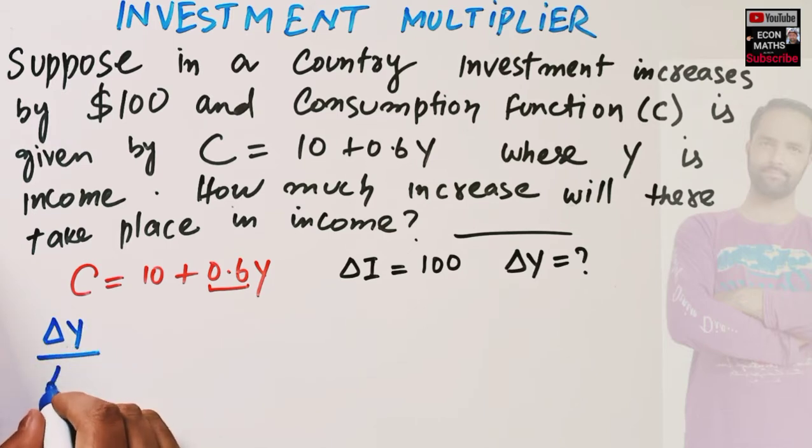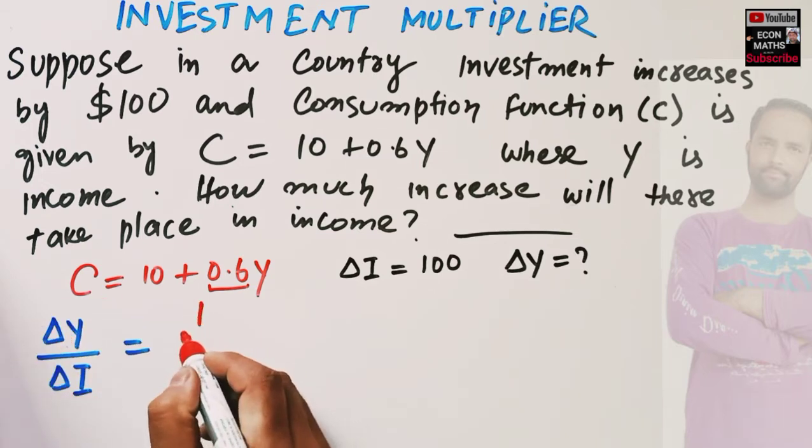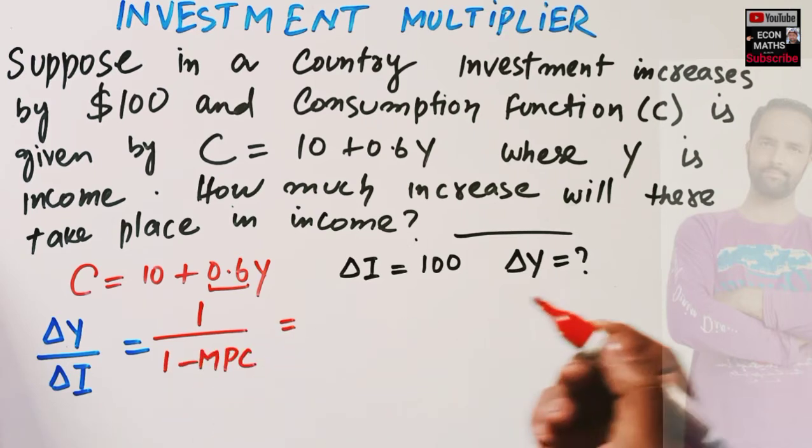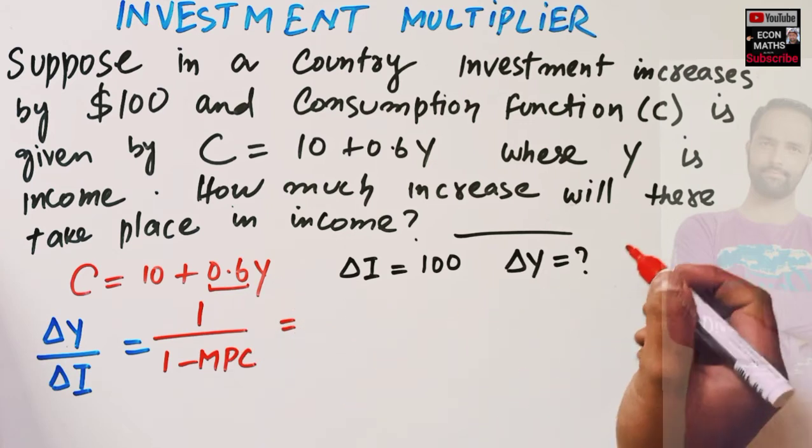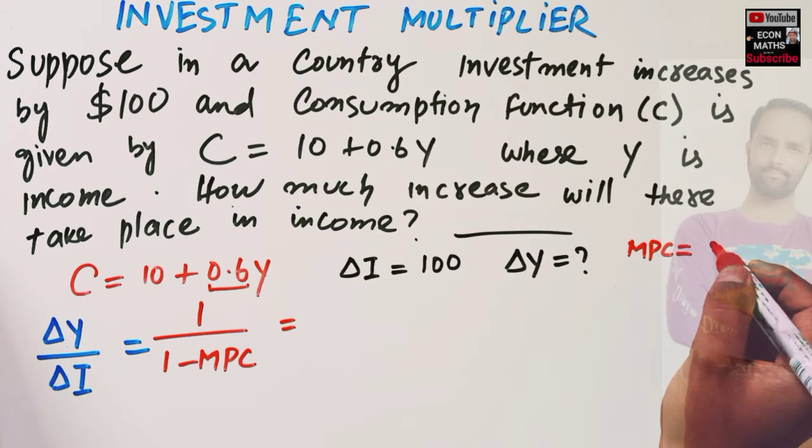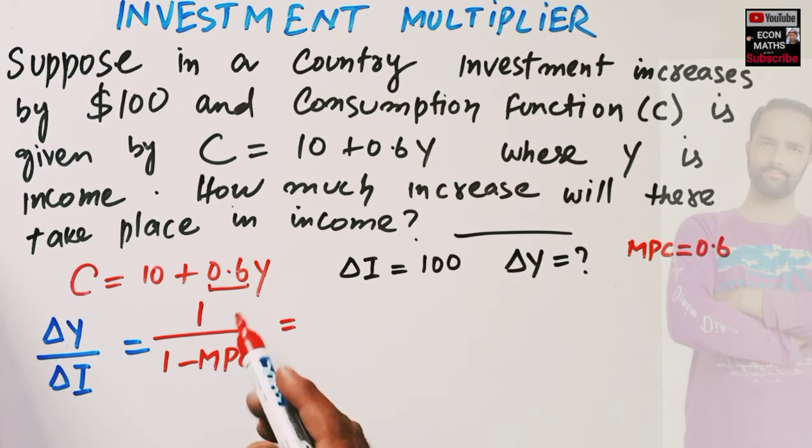That means we need to find out the investment multiplier and it is equal to... the formula for investment multiplier is simply 1/(1-MPC). Our MPC is equal to 0.6 here as I have told you, this denotes MPC.